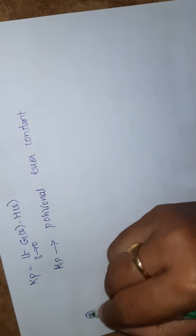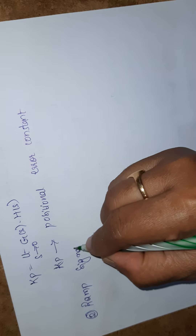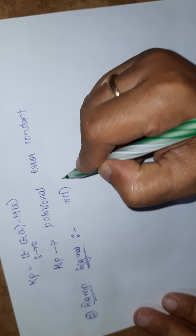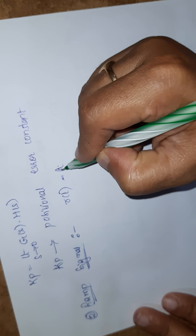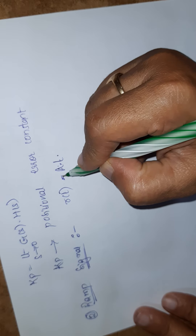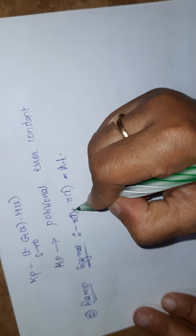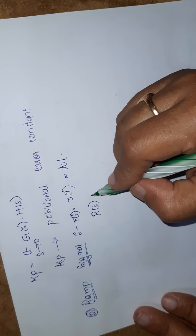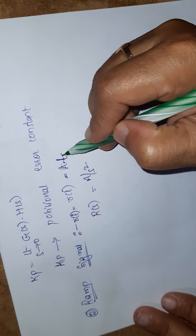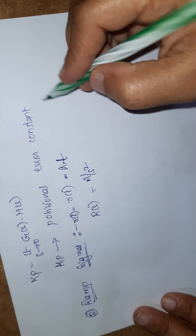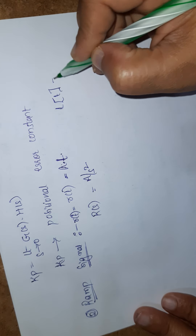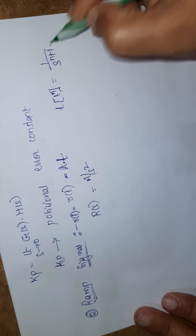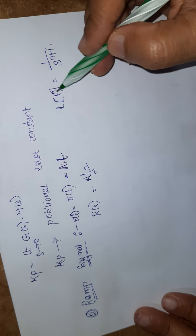The next input signal is the ramp signal. For a ramp signal, R(t) = A·t. The Laplace transform of t is 1/s², since the Laplace transform of t^n is n!/s^(n+1). So for n=1, R(s) = 1/s².